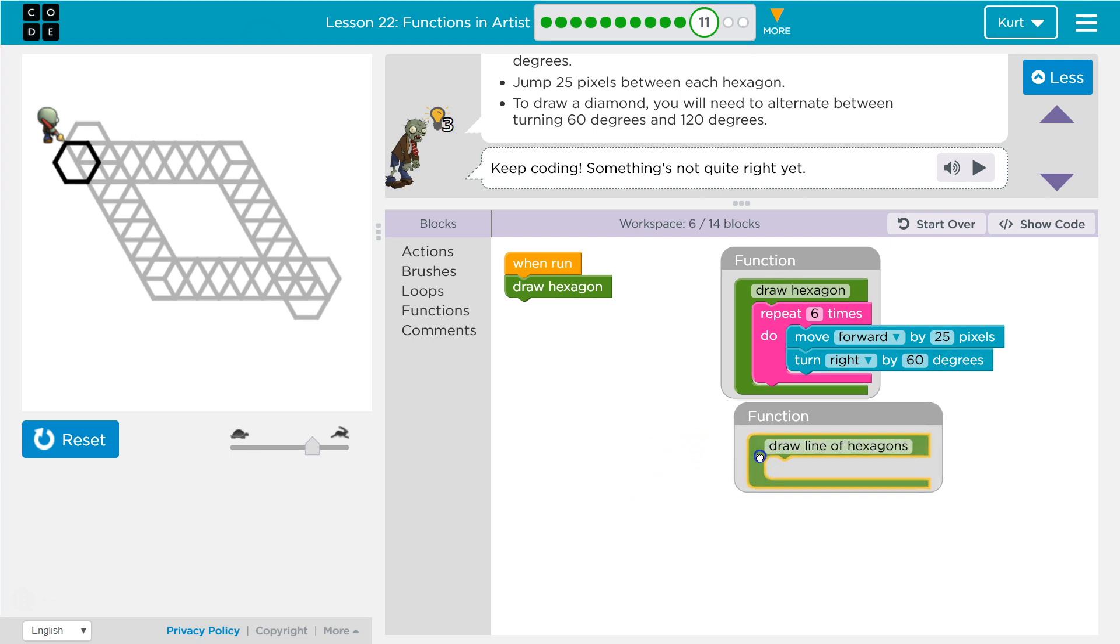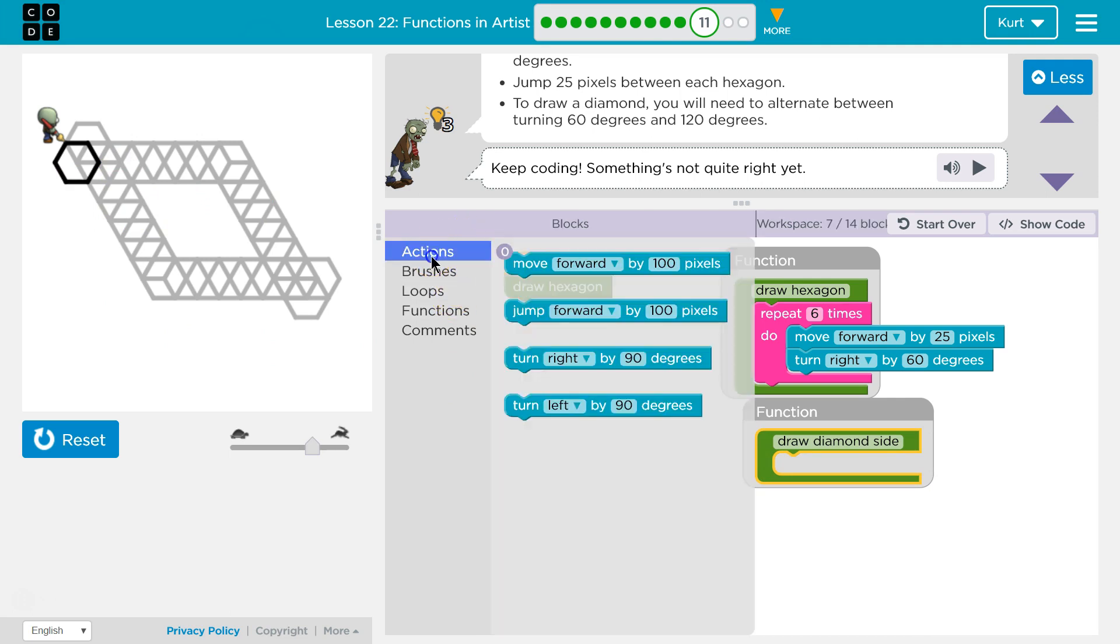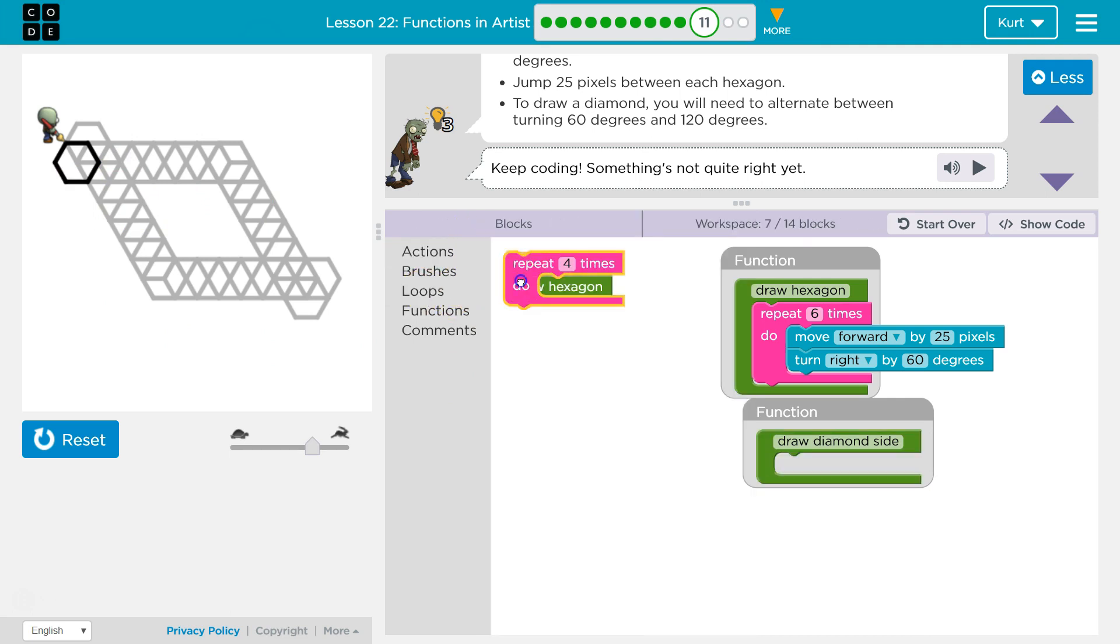Draw a line of hexagons I guess. It doesn't even look like. I'm going to call it draw a diamond side. Because that's what we're making again. To do that, how many hexagons? I have no idea how many hexagons are on the side there. They all mush together.